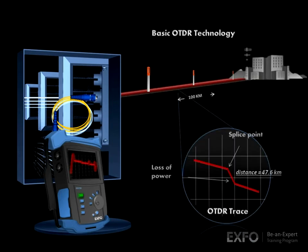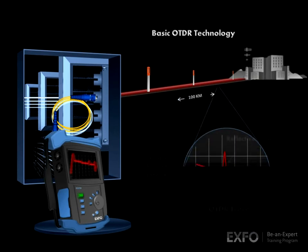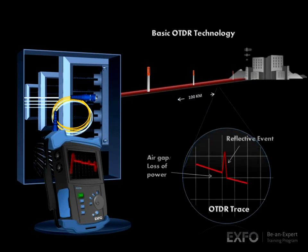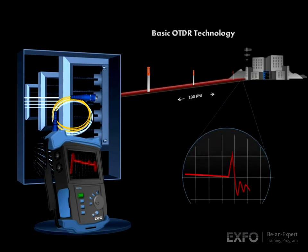The OTDR will accurately measure the distance to a splice and the loss of power at that particular splice. All reflective events are detected and measured for reflectance, power, and distance. Finally, the far end connection is detected and measured.